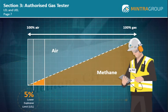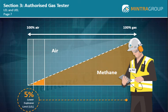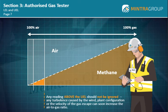As the AGT, it is the LEL which is important to you, as the gas testing equipment will alert you before the LEL is reached and will warn of the build-up of gas. However, any reading above the UEL should not be ignored. Any turbulence caused by the wind, plant configuration, or the velocity of the gas escape can soon increase the air-to-gas ratio and dilute the gas and air mix until it moves back to within the explosive envelope.